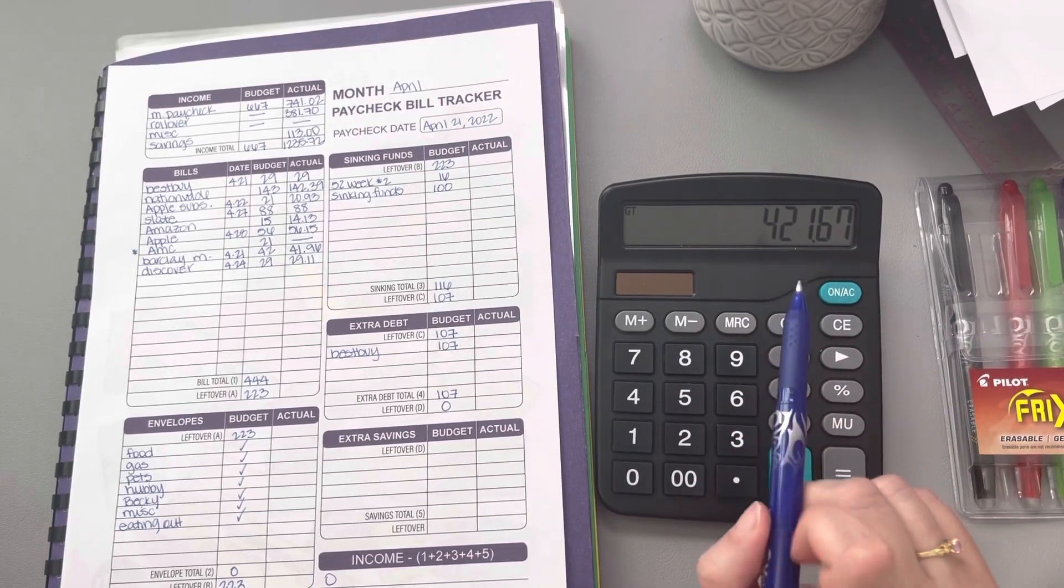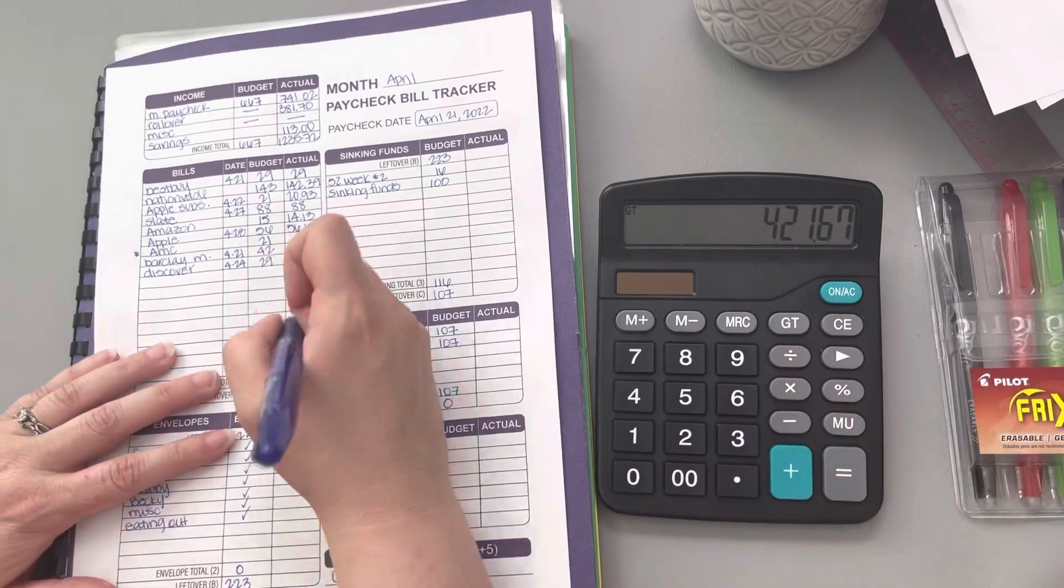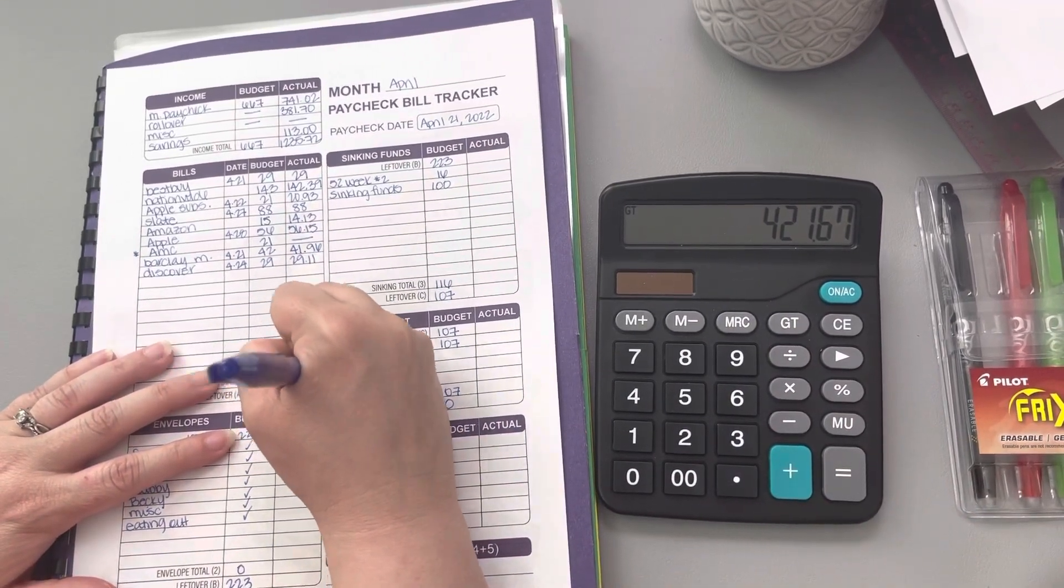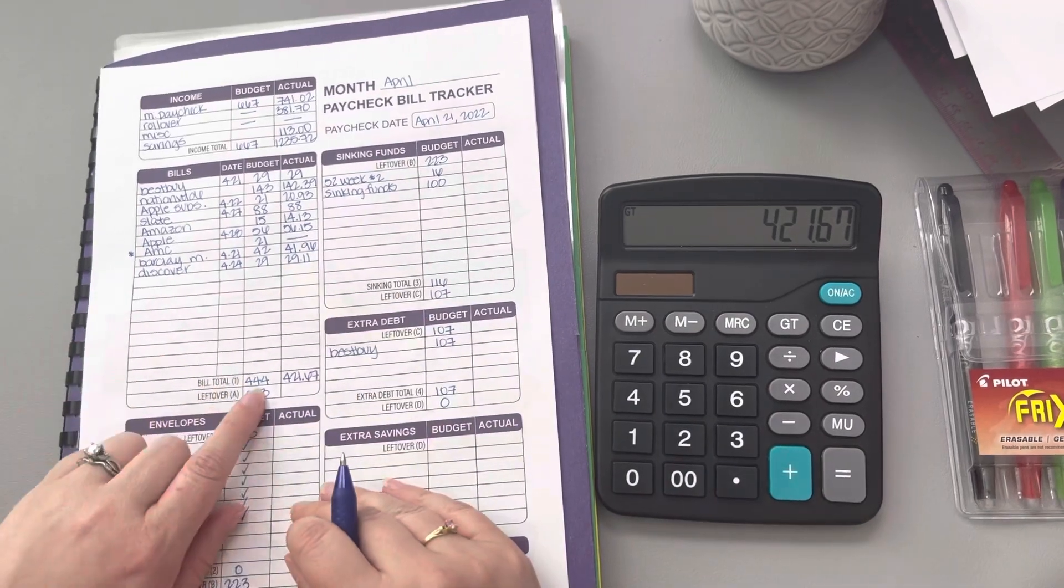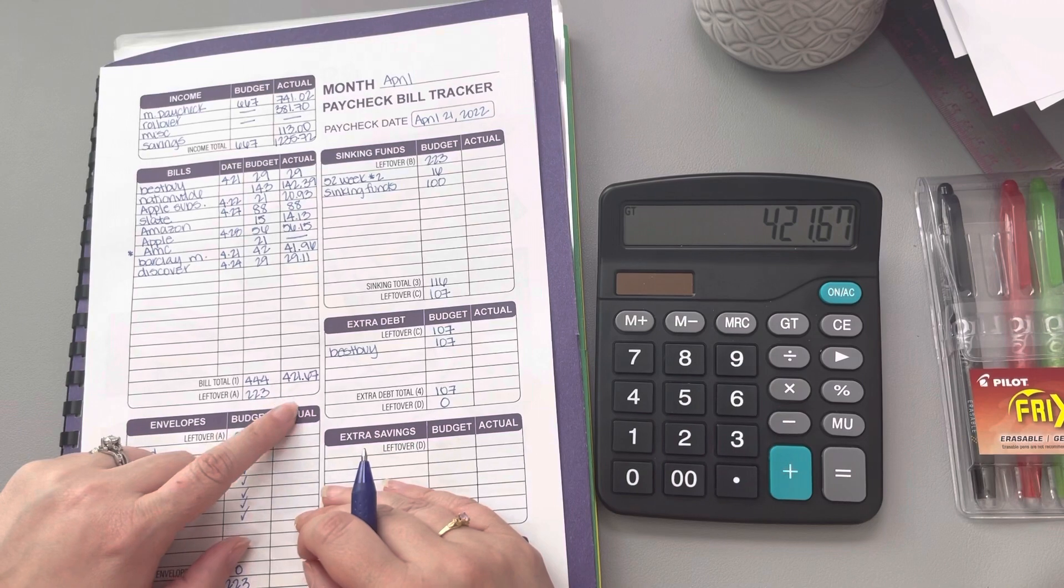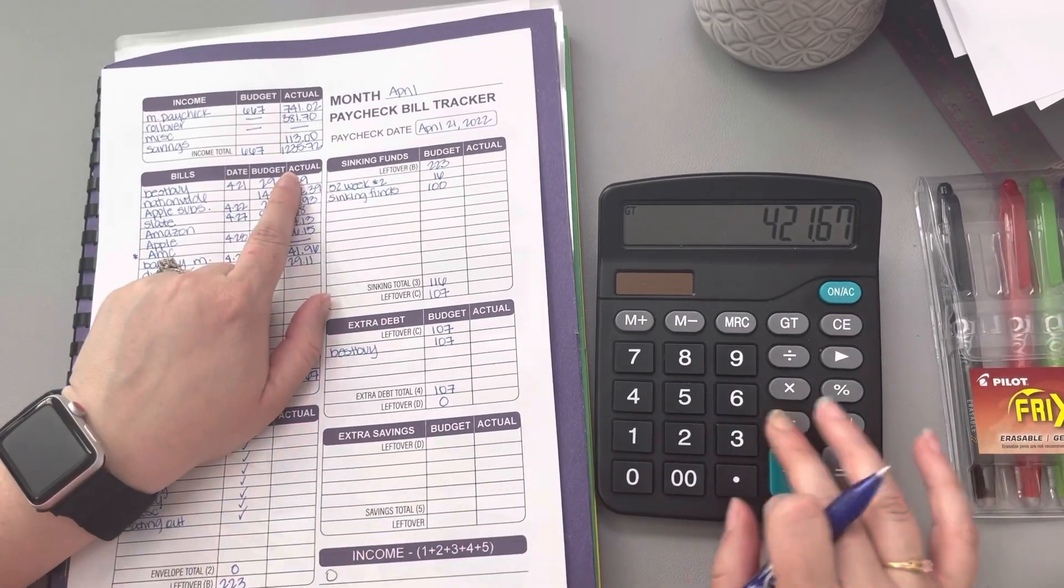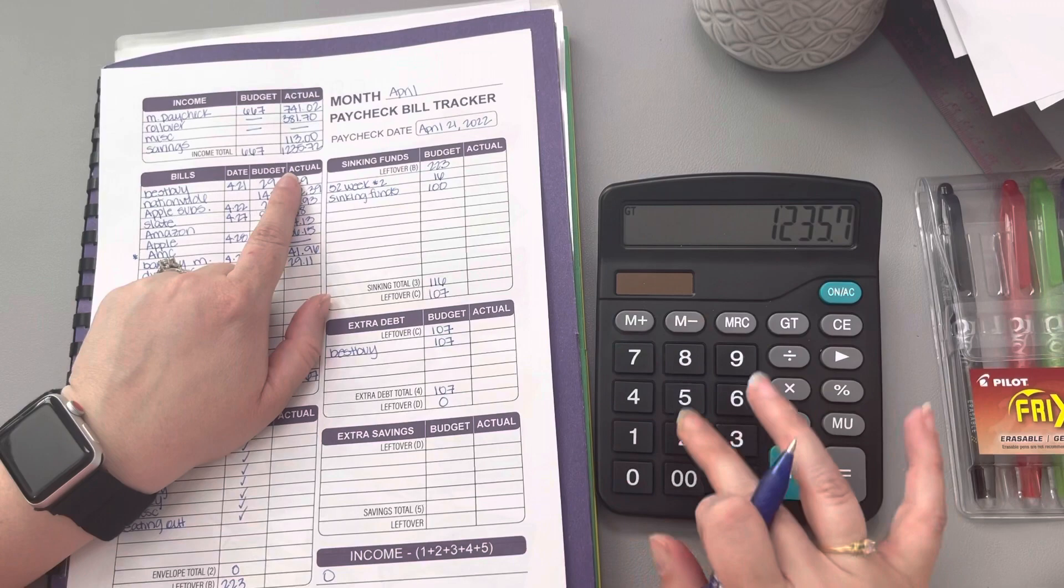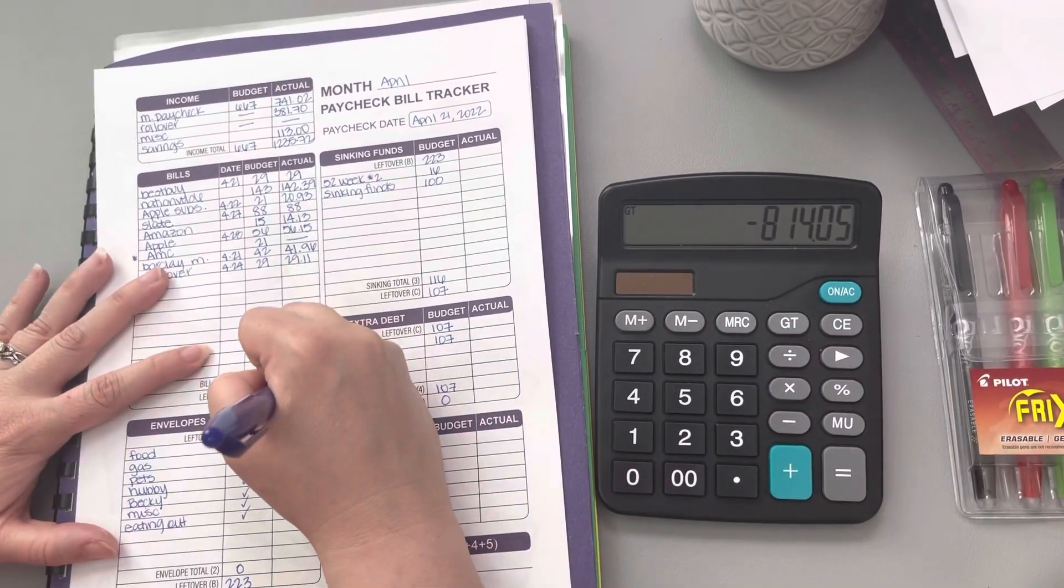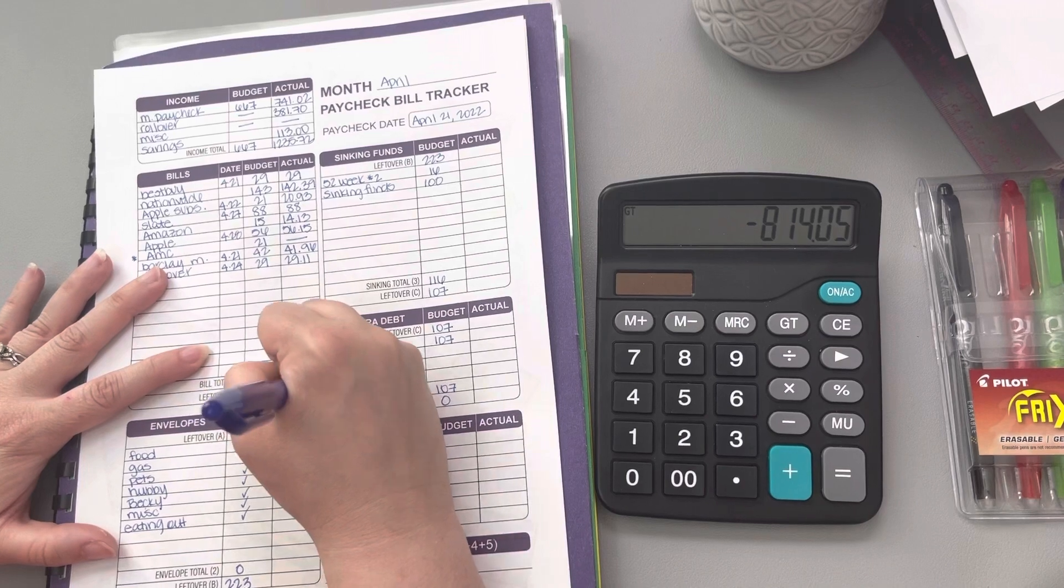And that comes to a total of $421.67, which we're under budget as to what I had budgeted. Now when we take the $421.67 away from our income, that leaves us with $814.05.